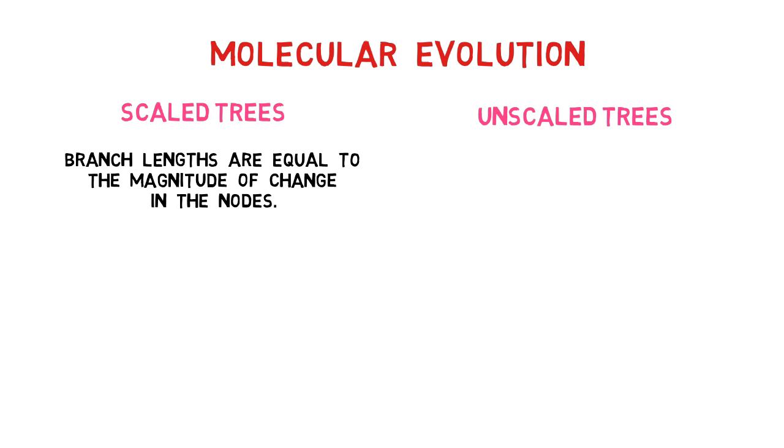In scaled trees, branch lengths are equal to the magnitude of change in the nodes, while unscaled trees only represent the relationship between sequences.